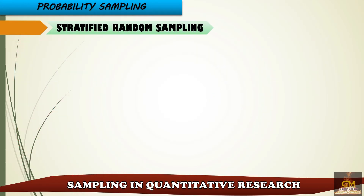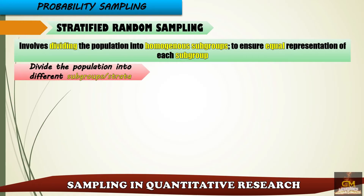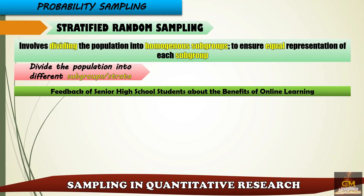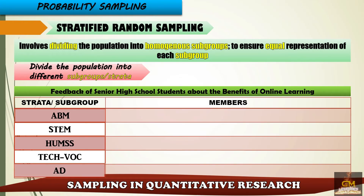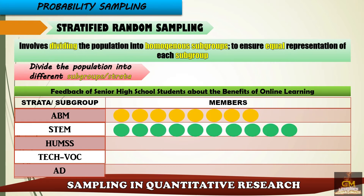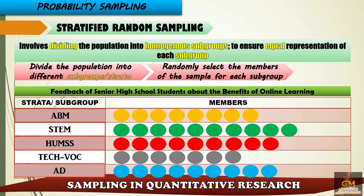Next, we have stratified random sampling, which involves dividing the population into homogenous subgroups to ensure equal representation of each subgroup. For example, in a study on senior high school students' feedback about online learning, the strata would be the different strands: ABM, STEM, HUMSS, TECVOC, and AD — since each strand has different numbers of enrolled students. After dividing the population, we randomly select members from each subgroup. If the total sample size is 25, we identify five members from each subgroup for equal representation.